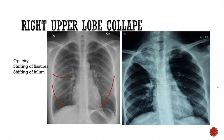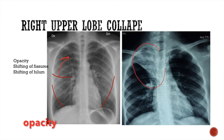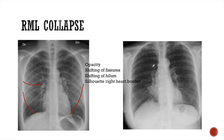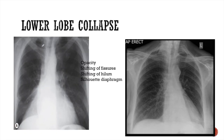In right upper lobe collapse, the right horizontal fissure is shifted upwards. There will be opacity in the right upper zone, the fissure shifts upward, and the hilum is also shifted upwards. In right middle lobe collapse, the fissure shifts towards the collapsed lobe, and we see a triangular opacity in the right middle zone. There is loss of the interface of this opacity with the right heart border — this is characteristic of right middle lobe collapse. In right lower lobe collapse, there will be triangular opacity in the lower zone with loss of interface of the collapsed lung with the diaphragm.